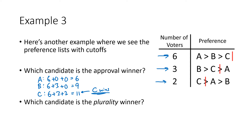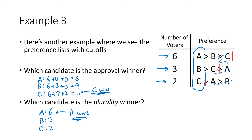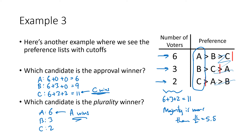Now let's find the plurality winner, which only uses first-place votes. A gets six, B gets three, C gets two — so A is the plurality winner. Not only did A win plurality, A actually got a majority: with 11 total voters, a majority is more than 5.5, and A got six first-place votes. Yet C was the approval winner — despite finishing dead last in first-place votes.